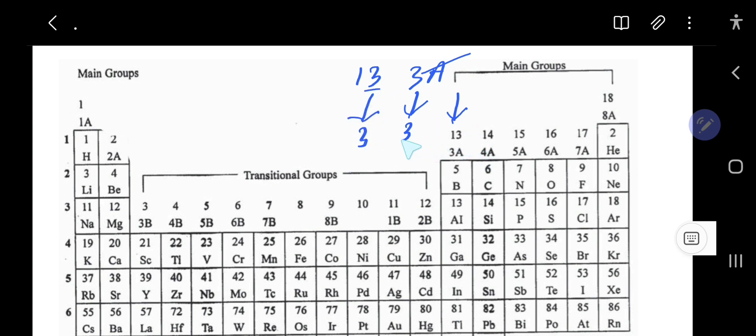So boron has three valence electrons. For main group elements, that is group 1, 2, and 13 to 18, group number equals valence electrons.